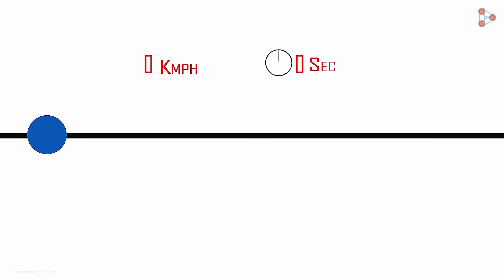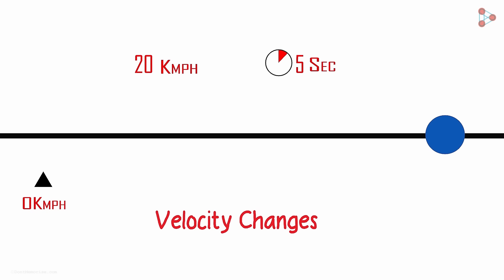Let's say a body moves from rest and reaches a velocity of 20 km an hour in 5 seconds. Will acceleration be involved here? Yes, because the velocity is changing. It was zero initially and at the end of 5 seconds, it's 20 km per hour.